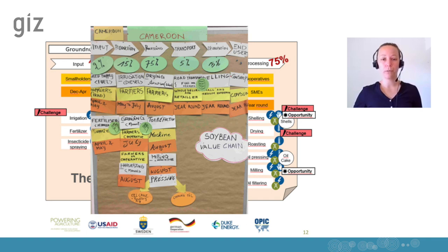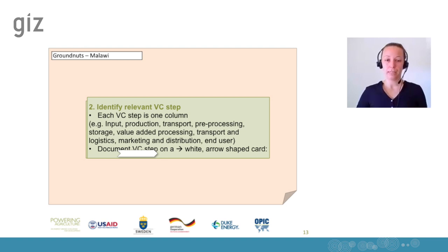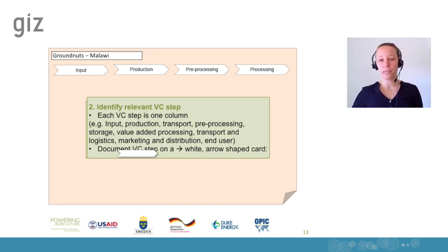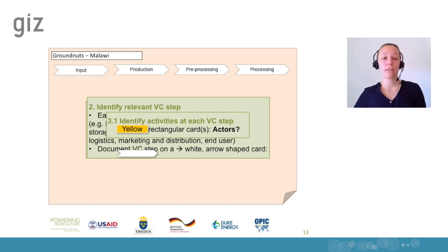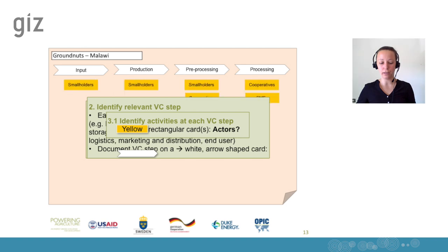In the second step, it is important to identify the relevant value chain steps — noted on white arrow-shaped cards. In this case we have: input, production, preprocessing and processing. Then in the third step, we identify the activities at each value chain step. We have three different colored cards. Yellow cards mark the actors — for groundnuts, these are smallholders, cooperatives and small and medium enterprises active along the value chain. Orange cards mark the timing.